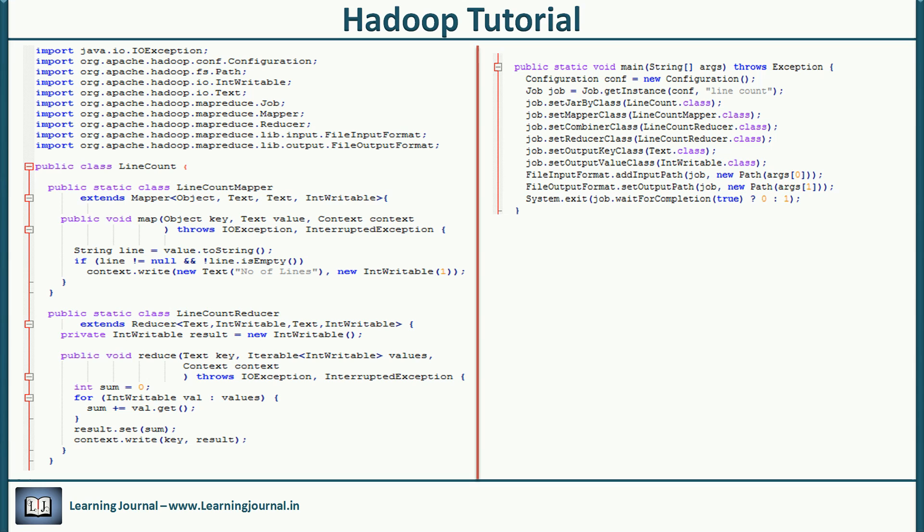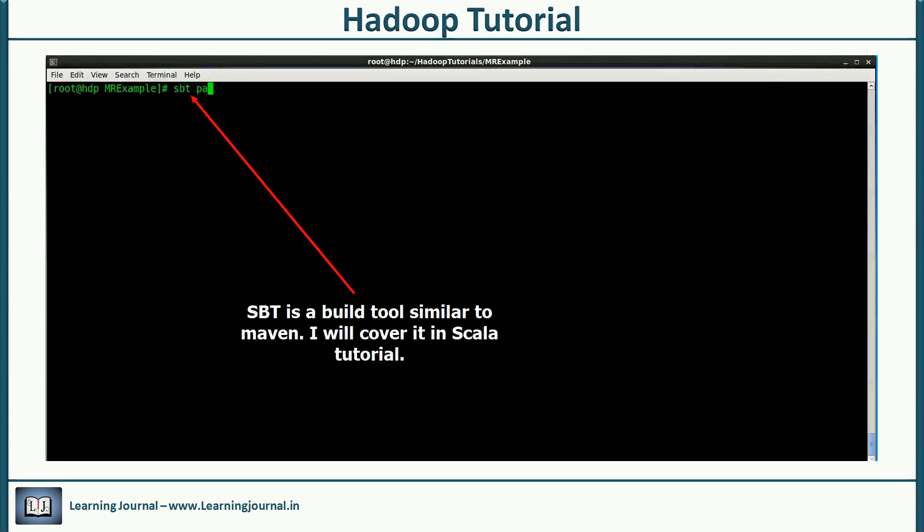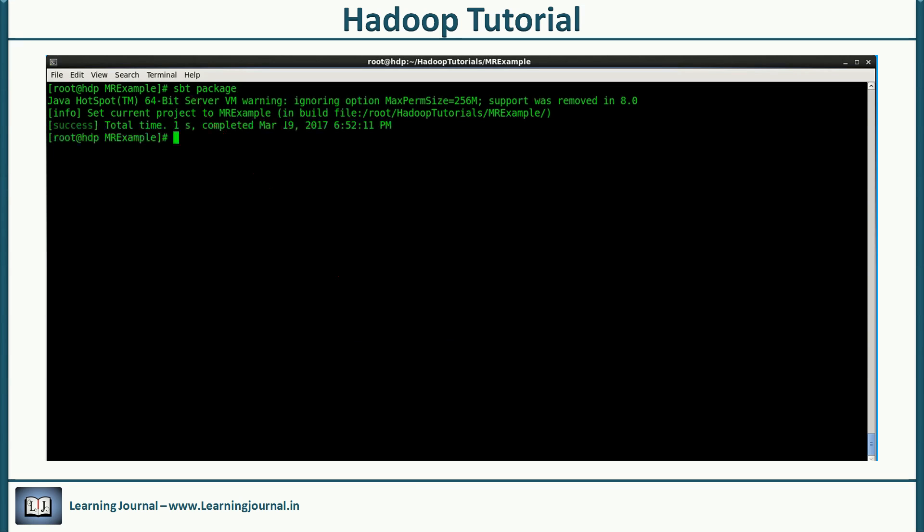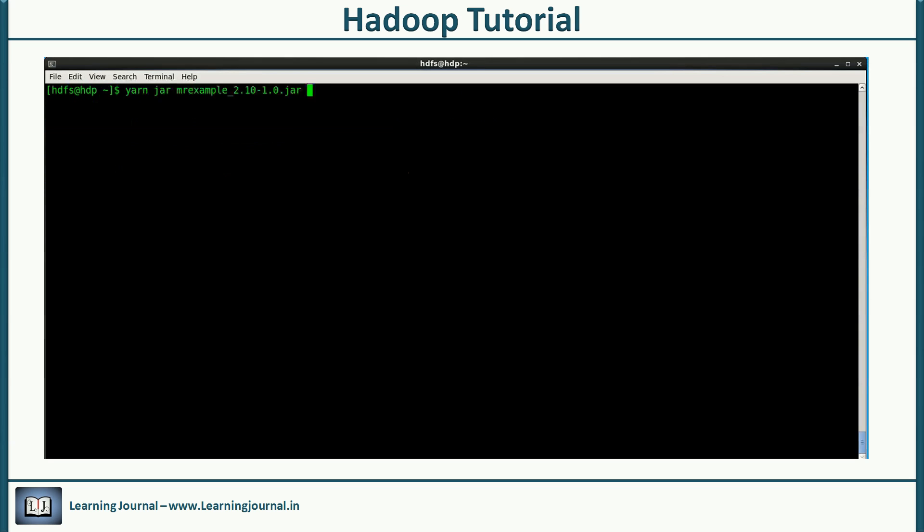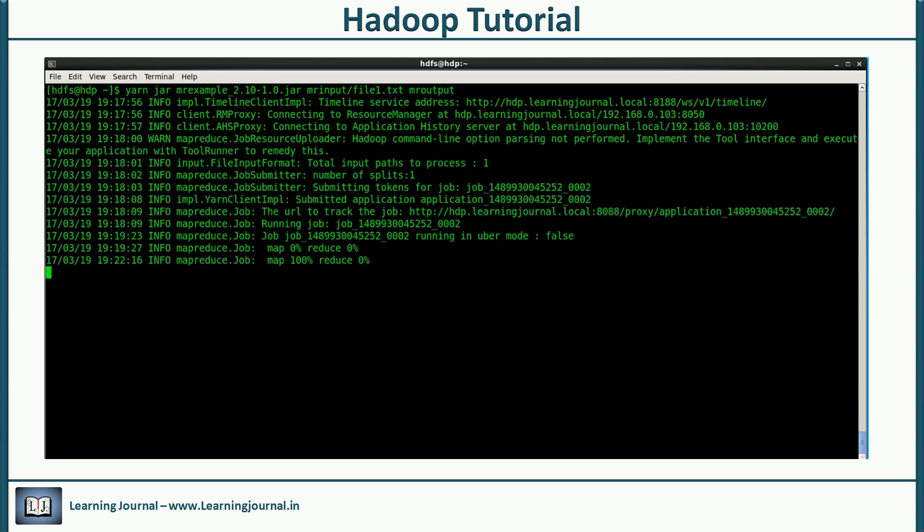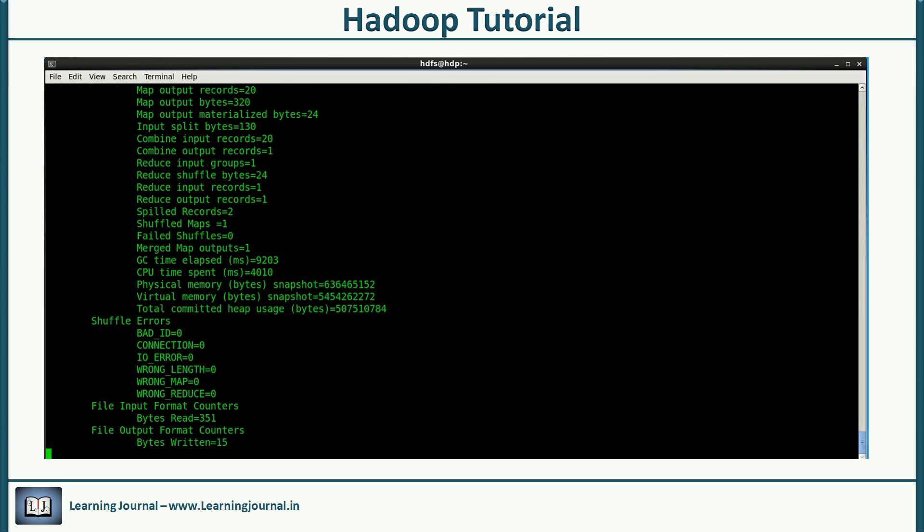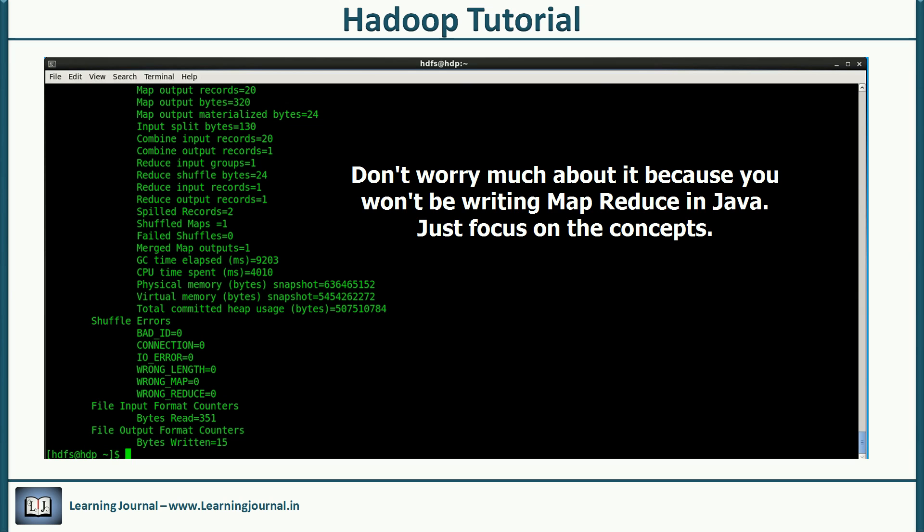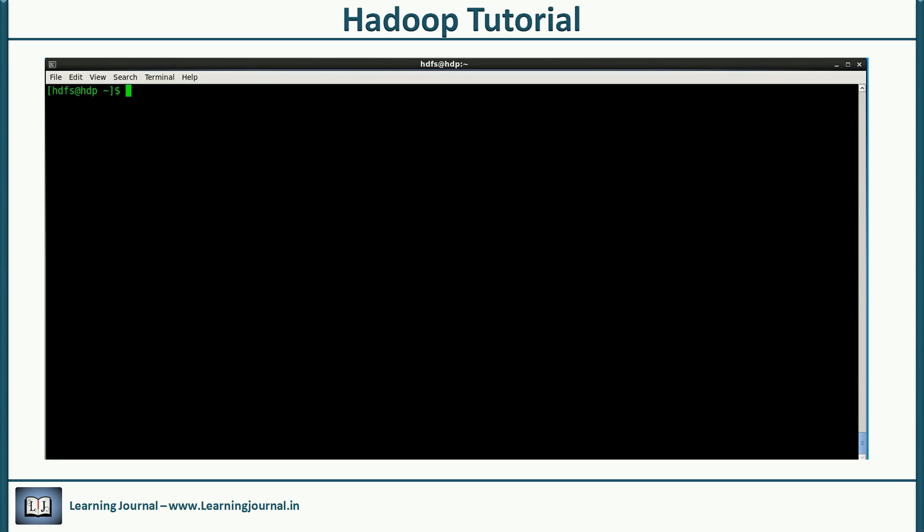So here is the code for a line counting MapReduce program. Let me execute it and show you the result, then we'll look into the details. To run a MapReduce program, we need to compile and package it into a jar. Here is my jar file. Now we need to submit it to YARN for execution. I'm passing two parameters: the first parameter is the input file name and the second is the output directory name. My data file is tiny, just 20 lines instead of 20 terabytes. Okay, complete. Let me show you the output.